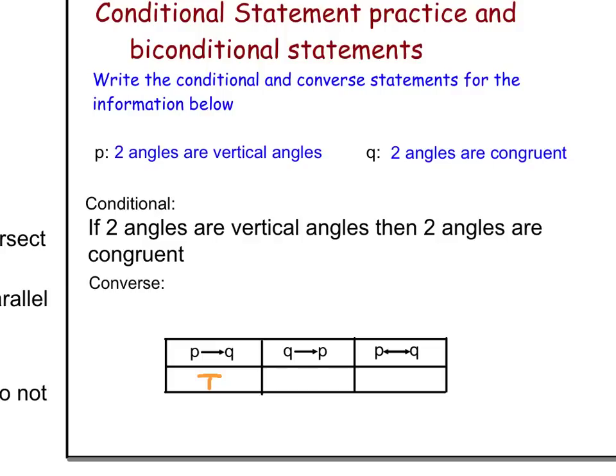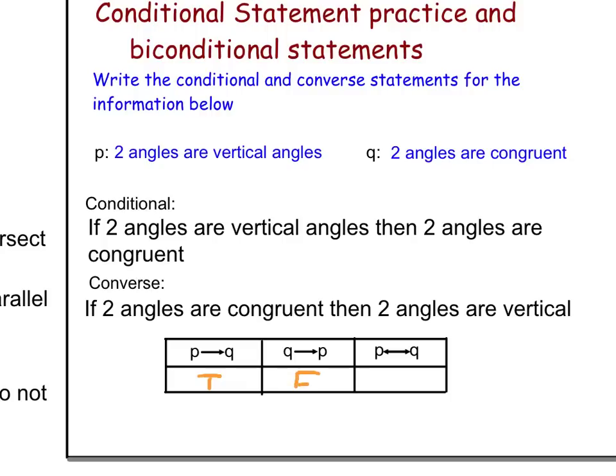Now pause the video and write the converse. The converse statement is if two angles are congruent, then those two angles are vertical. The truth value of that is false. Just because two angles are congruent doesn't necessarily mean they're vertical. They could be in completely different rooms. They could be in different planes. There's nothing about congruent that says that they have to be vertical.